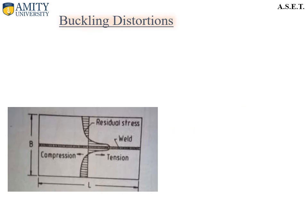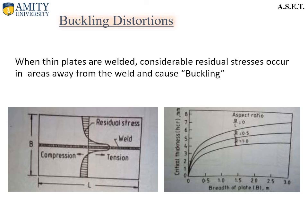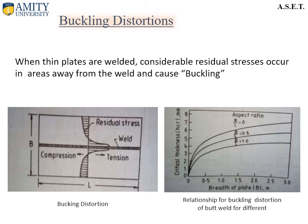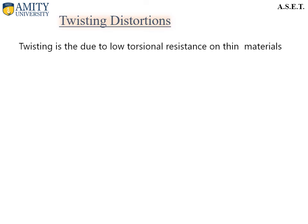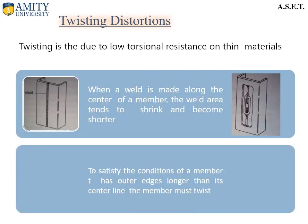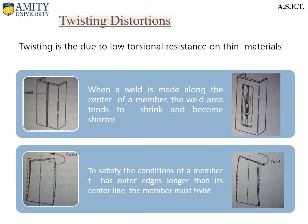Now let us discuss buckling distortion. When thin plates are welded, considerable residual stresses occur in the area away from the weld and cause buckling. A graph is shown between critical thickness and the breadth of the plate. Regarding twisting distortion, twisting is due to the low torsional resistance of thin material. The diagrams show how a twist can be observed after solidification and cooling down of the weld.